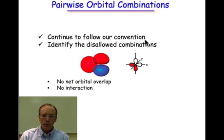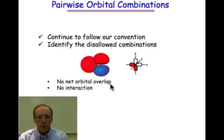When we have orbitals that are disallowed, they are orbitals that produce no net orbital overlap. There's no interaction, and in other words, we can ignore all of these combinations. They're not fruitful for the production of molecular orbitals.